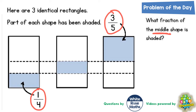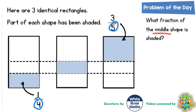The first thing to notice is that we've got fractions with different denominators. What you normally do when you've got fractions with different denominators is change them into a common denominator. We've got quarters and fifths, so we need a denominator that both four and five will divide into. You can multiply the two denominators together — four times five is twenty — so twenty is our common denominator.